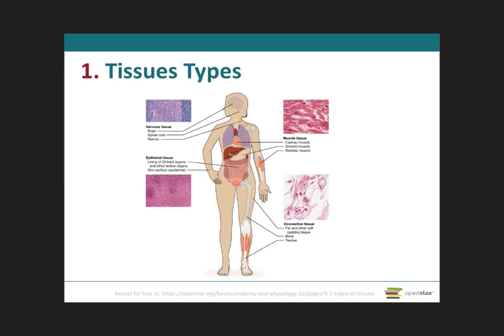There are three main characteristics of tissue with regards to their consistency. It can be hard, it can be semi-solid, or it can be liquid. Tissue will be formed by several different cell types, not just one. In addition, the cells are arranged in different ways depending on the tissue and also depending on the structure of the extracellular material. The extracellular material will basically define the consistency of the tissue — whether it is solid or hard, semi-solid, or liquid.